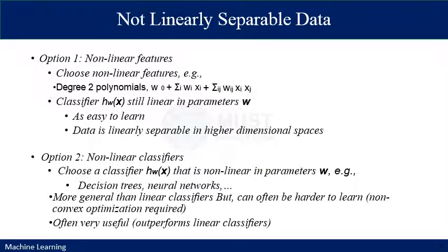In option one, you convert input features to a higher dimension using a polynomial expression — for example, a degree-2 polynomial — and then apply a linear classifier in the parameter weight space. This approach is easier to learn because the algorithm is still working on linearly separable data in a higher dimensional space.